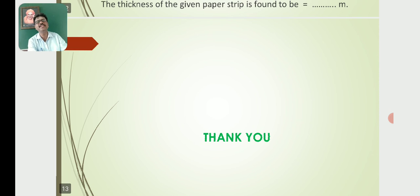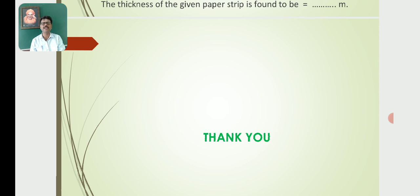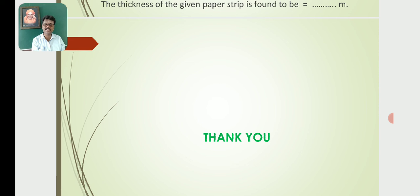In this class, we discussed what an air wedge is, how the air wedge can be set up, the experimental arrangement, the procedure of the experiment, and how the thickness of the paper strip can be determined. Thank you.